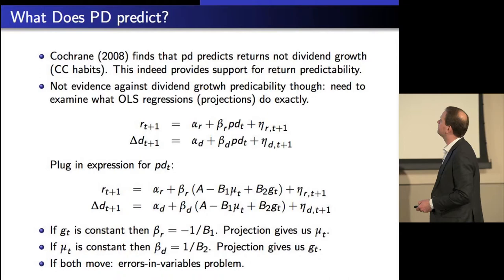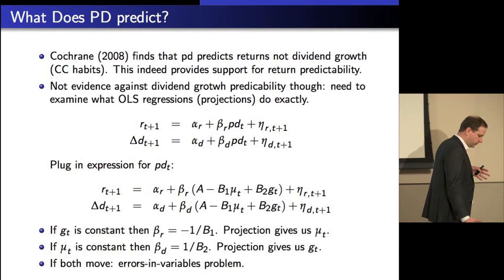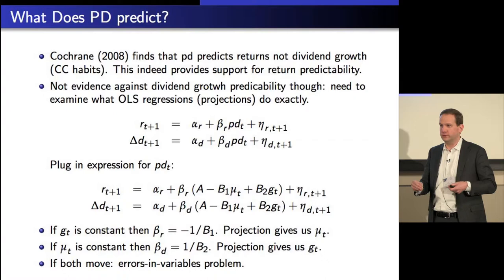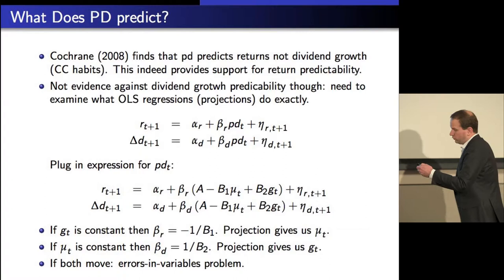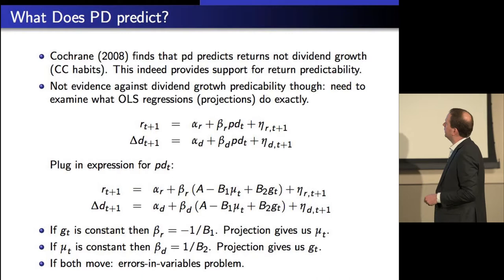Then what did Cochrane say? Cochrane said: suppose we have to choose. We can have long Goyal-Welch-type debates about whether out-of-sample things work or not, but in the end we just don't have another choice — the price-dividend ratio does move, so it must say something about either expected returns or dividend growth. What Cochrane said was: if I simply try to regress things, because the price-dividend ratio doesn't really say much about dividend growth, then it must be that it's returns.